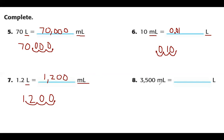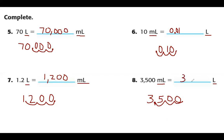Last problem on this page: we're starting with milliliters, the smaller unit, so we divide by 1,000. We have 3,500 milliliters; the decimal is at the end and we move it three places to the left — it replaces the comma. So 3,500 milliliters is the same as three and five tenths liters.